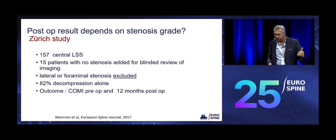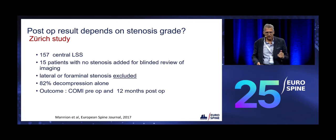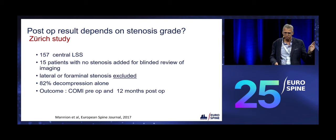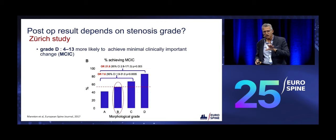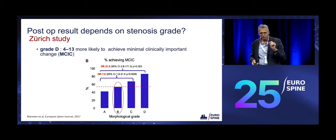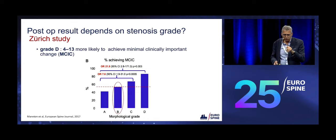I participated in a blinded review for a study that Ann Manion published in 2017 — I didn't take part in the surgery or deciding who needs surgery. Lateral and foraminal stenosis was excluded from the imaging, 82% were decompressed, and they included 15 patients with no stenosis to keep me blinded. The outcome was measured pre-op and at 12 months post-op. There was a subgroup of patients who also had true claudication. Grade D patients in this subgroup had 20 times more chances to reach significant clinical improvement, defined as 2.2 on the COMI scale.